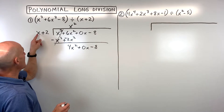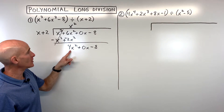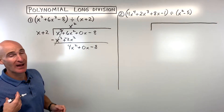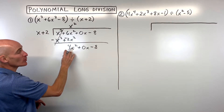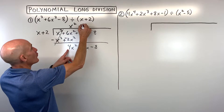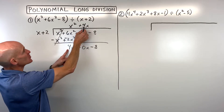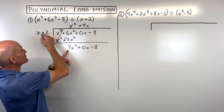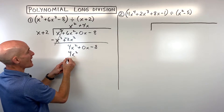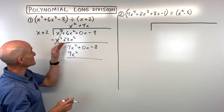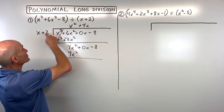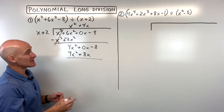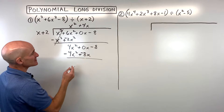Now we look at this first term again and say how many times does x go into 4x squared? Or: what times x equals 4x squared? That's going to be 4x. You know you have the right answer because when you distribute 4x to both terms, the first terms match — 4x times x is 4x squared. When we subtract, that first term cancels. 4x times 2 is 8x, and now we subtract again — change the signs to the opposite and add.